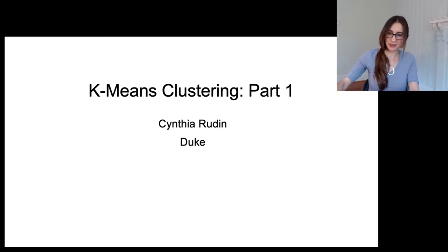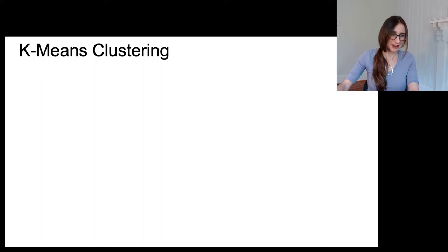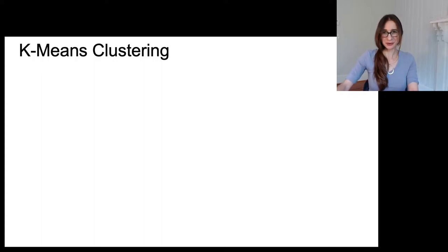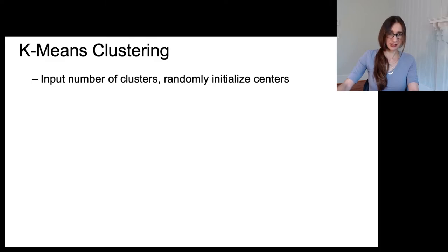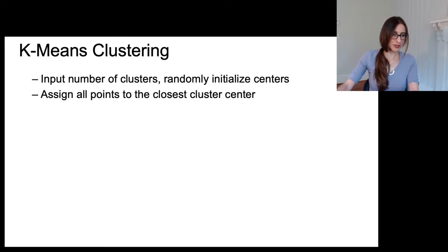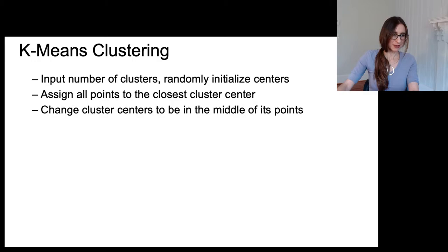Let's talk about k-means, which is probably the most popular clustering algorithm. The steps are: input the number of clusters and randomly initialize the cluster centers, assign all points to the closest cluster center, then change the cluster centers to be in the middle of their points, and repeat until convergence.